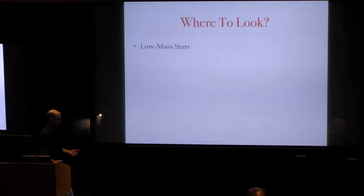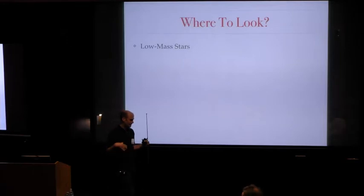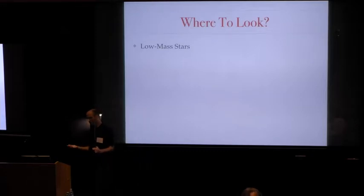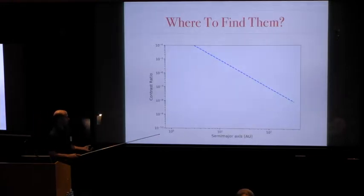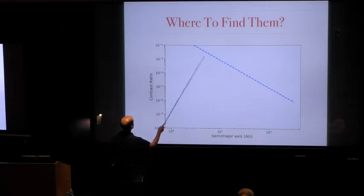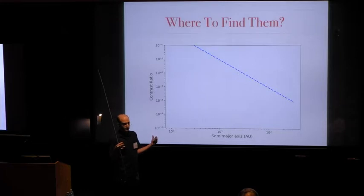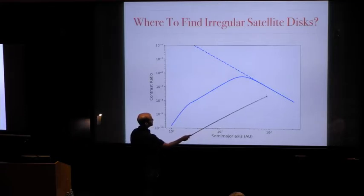We've been trying to think about what would be the best type of target star to look for these types of objects. The first thing is you really want to look around low mass stars. That's because low luminosities and weak radiation pressures means that you can have much smaller particle sizes. So that means that for the same mass budget in irregular satellites, you'll have a lot more scattering surface area for a planet around an M star than a planet around an A star. You can also ask where should your planet be so that you're able to find these better.